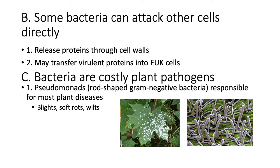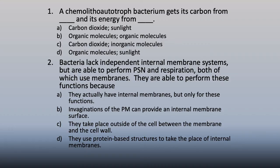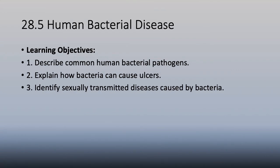Final review: a chemolithoautotroph bacterium gets its carbon from carbon dioxide and energy from inorganic molecules. Bacteria lack internal membrane systems but perform photosynthesis and respiration using invaginations of the plasma membrane for internal membrane functions. The bell is about to ring - we'll pick up with section five on human bacterial disease and section six on the benefits of prokaryotes.